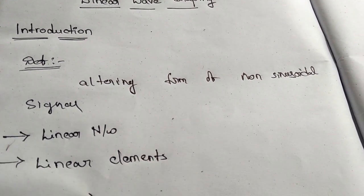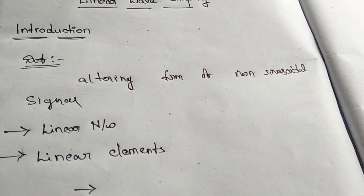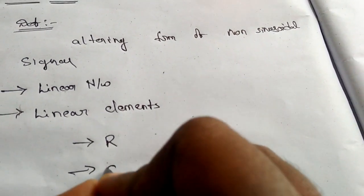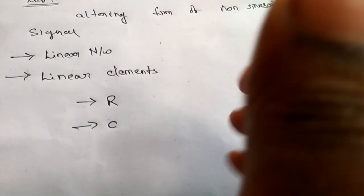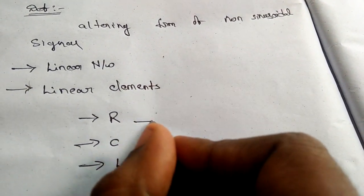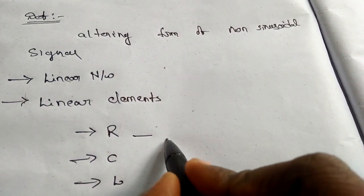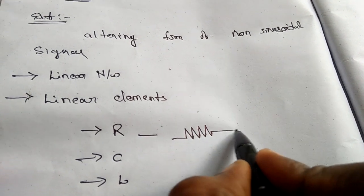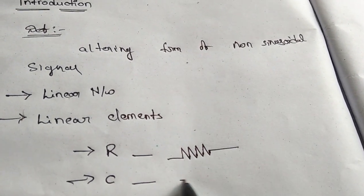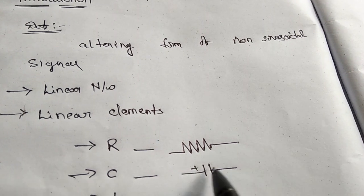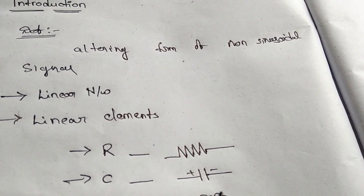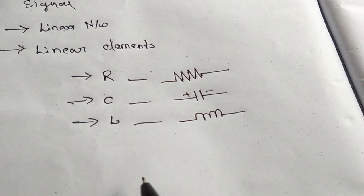Linear Elements are the components which are Resistors, Capacitors, and Inductors. Resistance can be represented by this symbol, the Capacitor is represented by this symbol, and the Inductor is represented by this symbol.